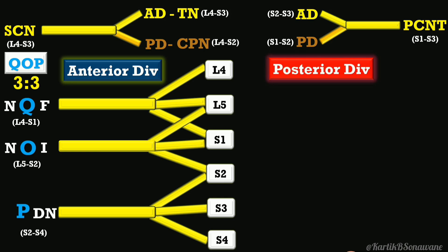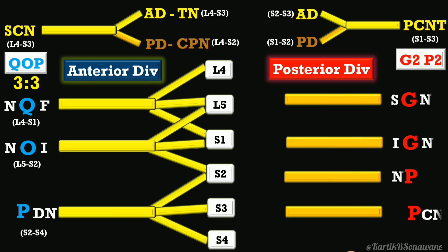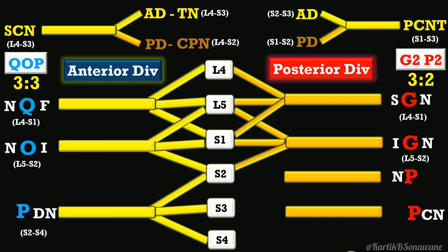For the posterior division branches, use the mnemonic G2P2, which stands for: superior gluteal nerve, inferior gluteal nerve, nerve to piriformis, and perforating cutaneous nerve. The formula is 3-2: the first two branches arise from three roots with overlap, and the next two arise from two roots with overlap. S4 is always excluded from the posterior division branches.